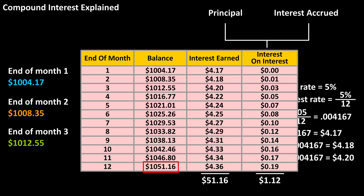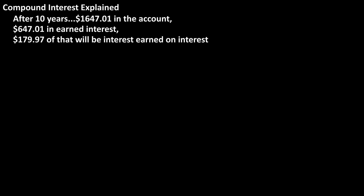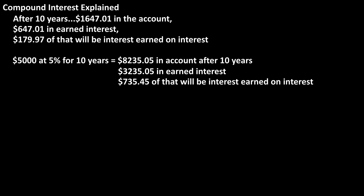This may seem very small, but how much would be in this account after 10 years? Well, it will have $1,647.01 in the account, so $647.01 paid in interest, and of that, $179.97 would be interest on interest. And what if you invested $3,235.05? So $3,235.05 paid in interest, and of that, $735.45 would be interest on interest.